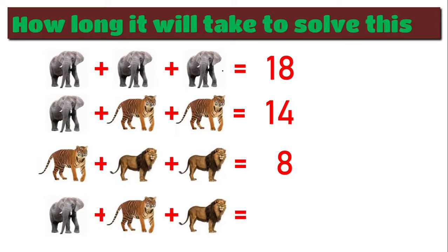Here you can see three elephants and the total sum of three elephants is equal to 18. Therefore the total is 18, which means you need to divide by 3. So when you divide by 3, you will get 6. Therefore each elephant value will be 6 plus 6 plus 6, so it becomes 18.